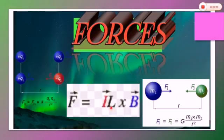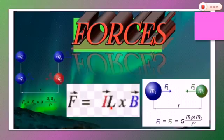A current-carrying coil placed in a magnetic field rotates because it experiences a force. This force is the basis of electric motors, as I explained in the last lesson.